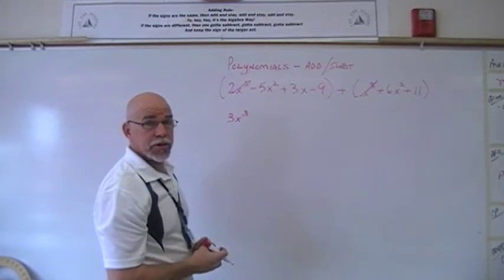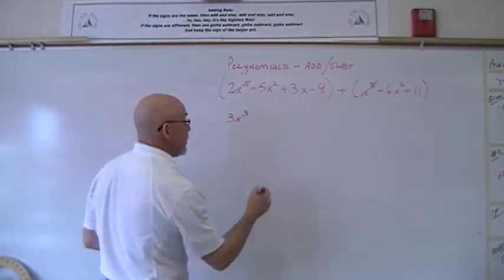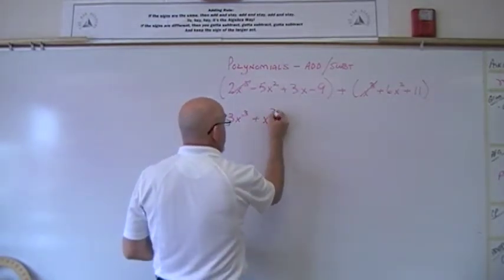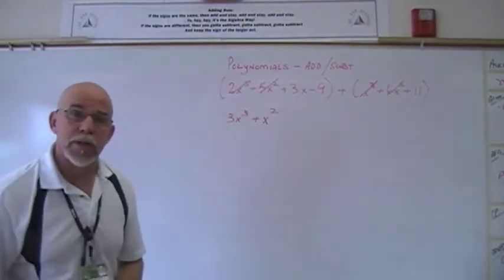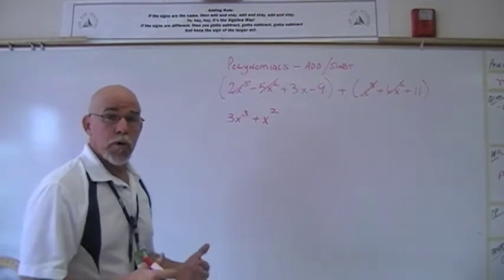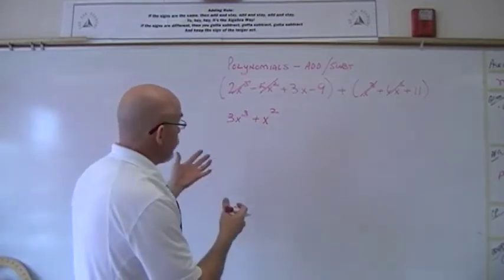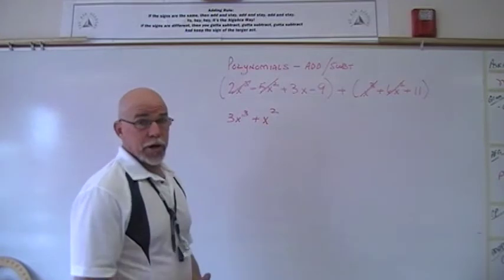There I've got x squared six of them. When I use the adding rule, the signs are different, so I've got to subtract and keep the sign of the large one. I end up with positive one of those x squareds. Mark them out when I get done with them so I know in the long string where I'm at, where I've done, what I still need to do. I look for the next degree term.